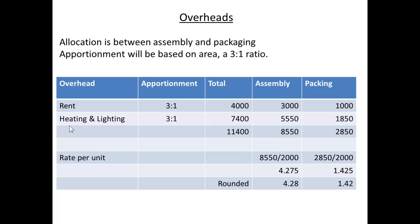Here's this in action. We're going to allocate between assembly and packaging on a 3 to 1 area ratio. Rent was a total of £4,000, so apportioned it will be £3,000 to assembly and £1,000 to packing. Heating and lighting was £7,400 total, so apportioned that gives £5,550 to assembly and £1,850 to packing. Adding those together gives £11,400 in total, split as £8,550 to assembly and £2,850 to packing.